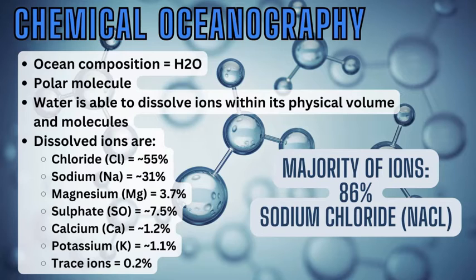The dissolved ions that can go into ocean water include chloride, which is a little over half — about 55% of all the ions in ocean water. Then you have sodium around 30%, magnesium around 3.5%, sulfate about 7.75%, calcium about 1.2%, potassium about 1%, and then about 0.2% on average of trace components — small ions that are dissolved inside the ocean water.